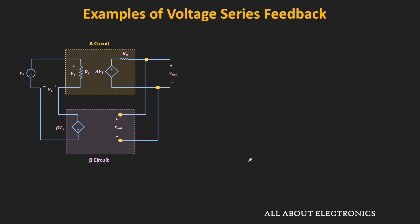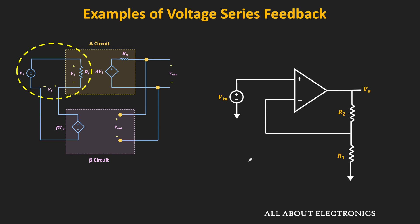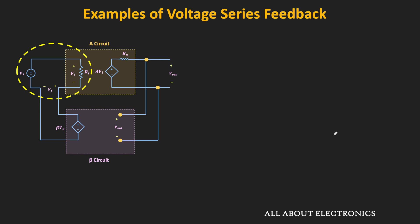Now let us see how to do the series mixing in actual circuits. In series mixing, we subtract the feedback voltage from the source voltage. The non-inverting op-amp configuration is one example: the feedback voltage Vf is connected to the negative terminal, and the input signal is connected to the positive terminal, so the op-amp amplifies the difference between the two input signals. In transistor-based circuits, a single transistor can act as a voltage subtractor — if the input is applied at the gate and the feedback signal at the source of the MOSFET, then Vgs = Vin − Vf.